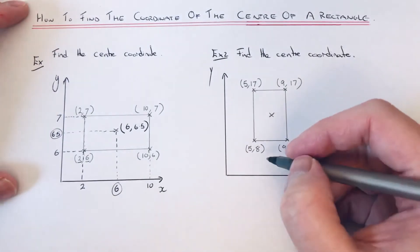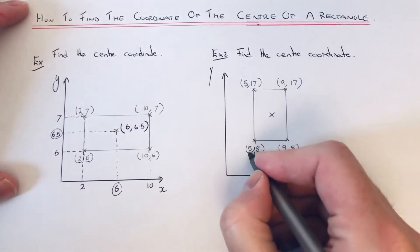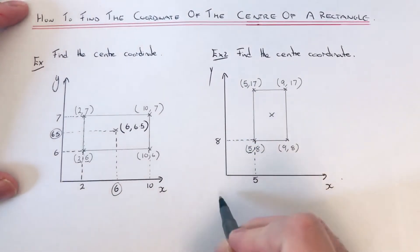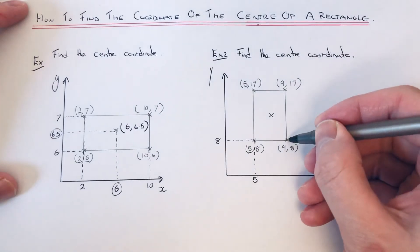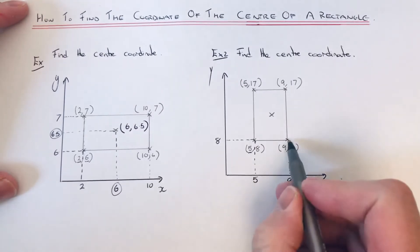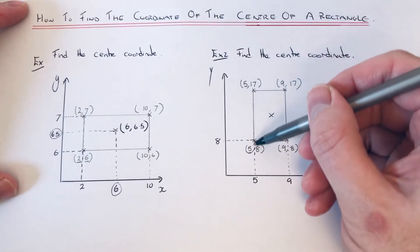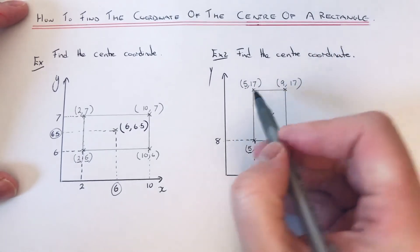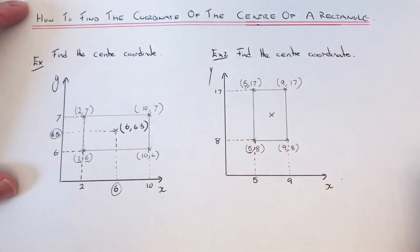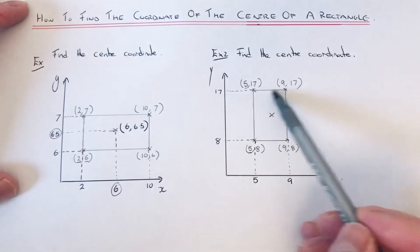Again we need to find the center coordinate, so mark the coordinates on the x and y axes. Starting with the bottom left corner: the line going down gives five on the x-axis, and the line going across gives eight on the y-axis. The next corner has a line going down to nine, with eight already on the y-axis. The top left corner gives five on the x-axis and seventeen on the y-axis. The last corner confirms nine and seventeen.